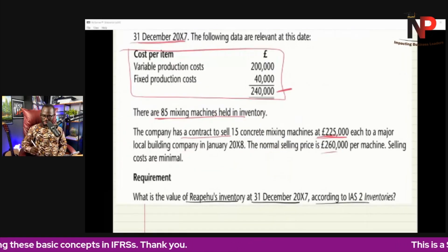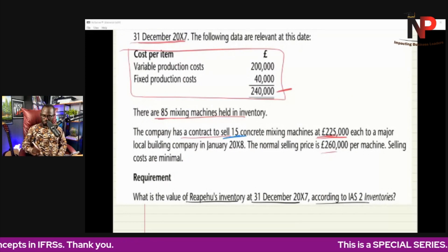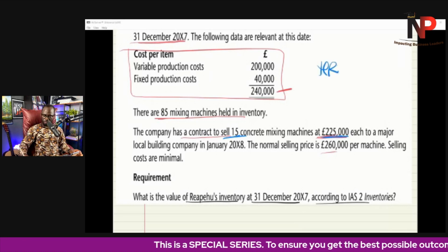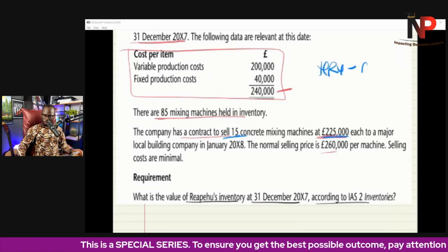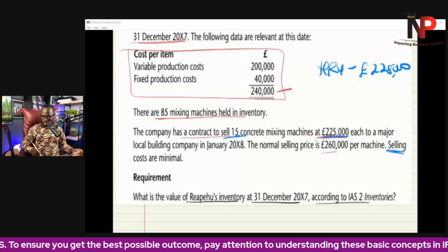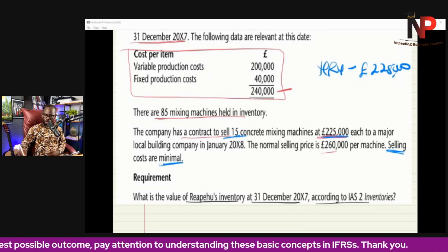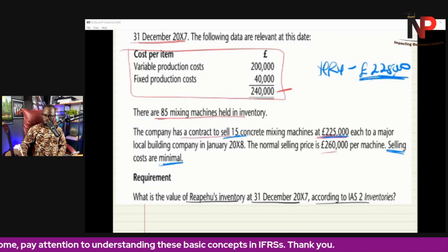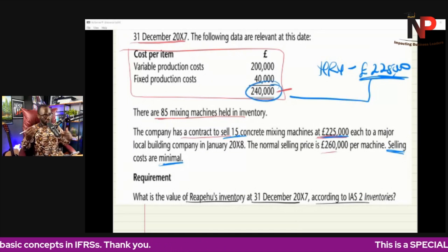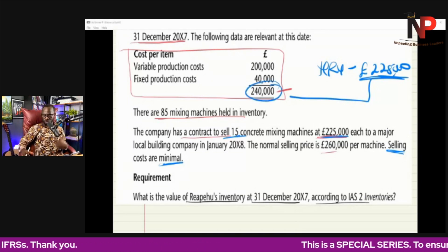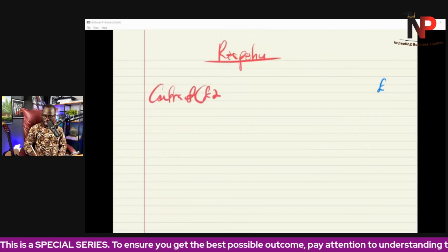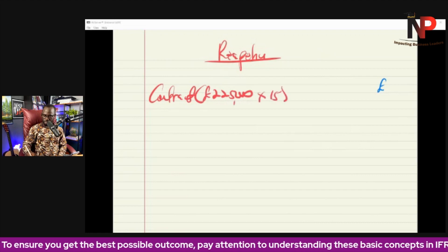Going back, there are 15 of the machines that have to be sold at $225,000. The net realizable value here for the contract is $225,000 because we are told that the cost to sell is minimal and negligible. If you compare that to the cost of $240,000, you realize that the net realizable value is lower. So $225,000 is the lower of the two — it will be used for the contracted machines.